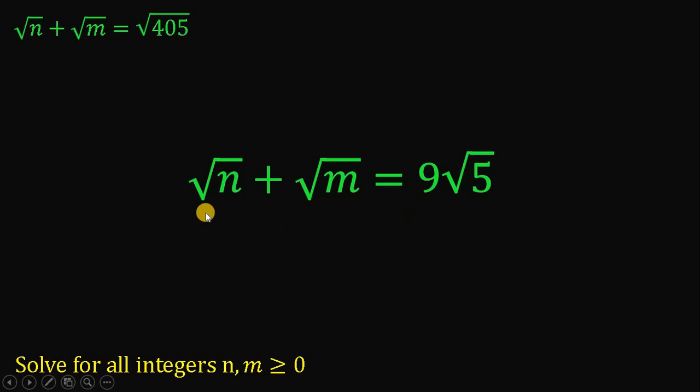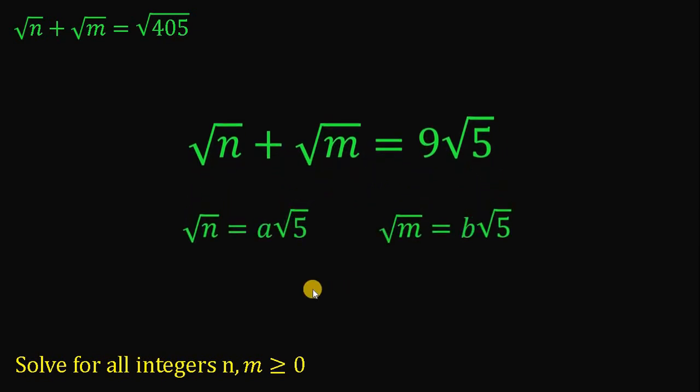Now, this tells us that square root of n can be written as something times square root of 5. Also, square root of m can be written as something times square root of 5. So, let square root of n be a times square root of 5 and square root of m be equal to b times square root of 5, wherein this a and b adds up to 9. So, we can say that a plus b must be equal to 9.